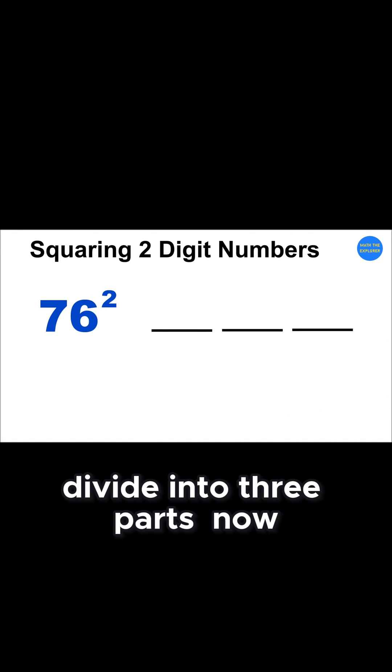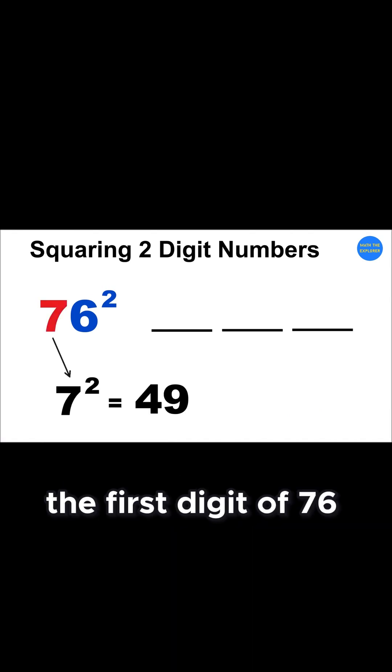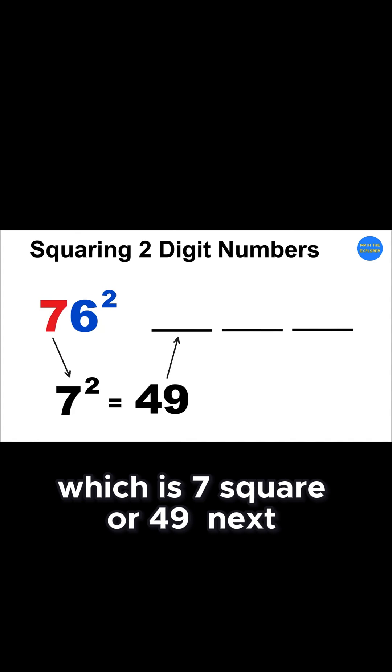Divide into three parts. Now, square the first digit of 76, which is 7 square, or 49.